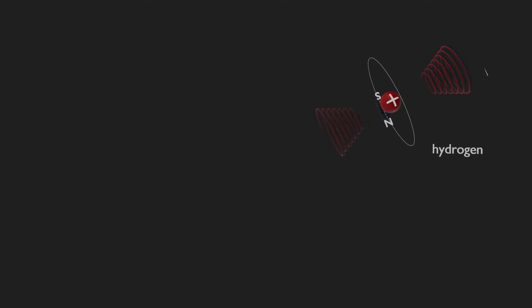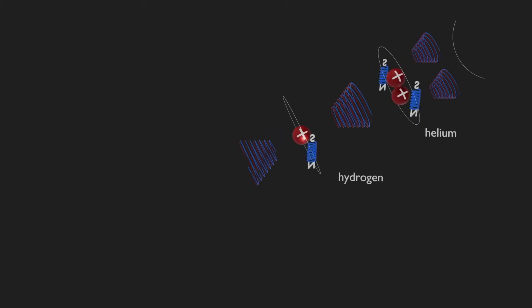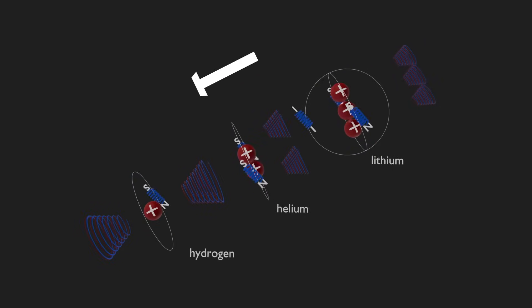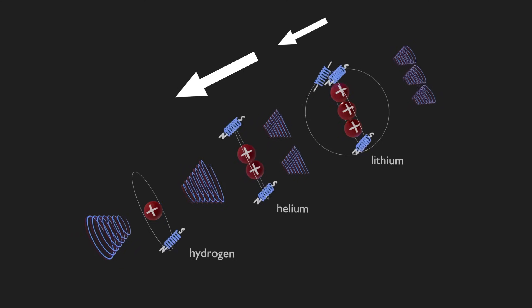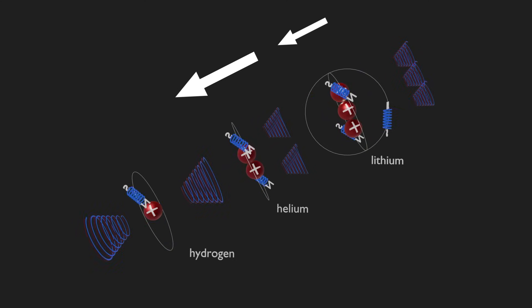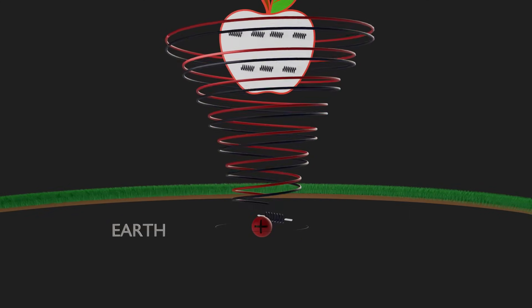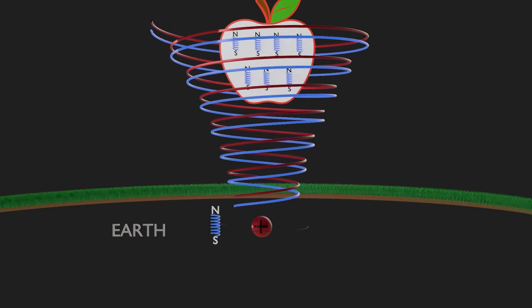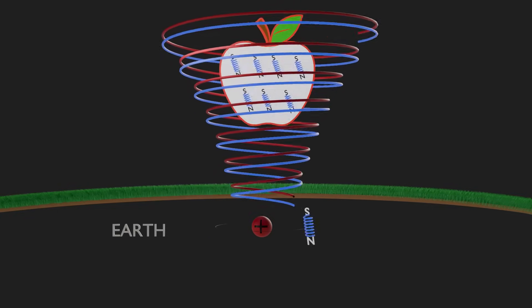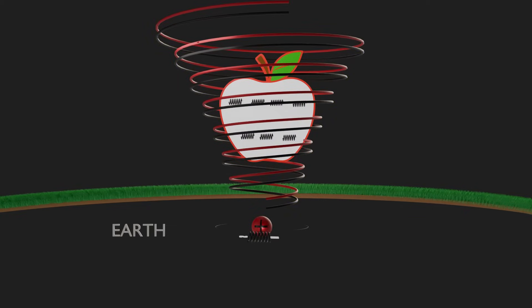Gravity waves from hydrogen synchronise the spin of electron magnets in neighbouring atoms. Those electron magnets then radiate gravity waves of their own, which explains why the sun and moon pull in the same direction. When gravity waves from hydrogen in the earth are magnetic, the electron magnets in the apple are magnetic, so the apple is attracted to the earth. When they are electric, atoms do not attract each other.